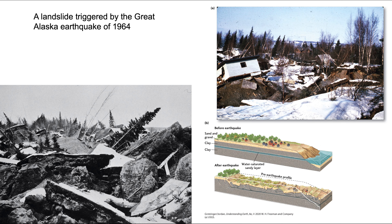Landslides can be triggered by earthquakes — here's an example from the Good Friday earthquake of 1964 in Alaska, which brings all the bad mass wasting characteristics together in one event. We have loose sand and gravel sitting on top of impermeable clay, beneath which lies a water-saturated sandy layer. When this is shaken, that water-saturated layer provides a greased, slippery layer, and the destabilization above causes the material to break up and slump — destroying any buildings or roadways on top of it.